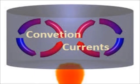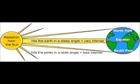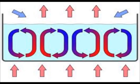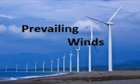Convection currents. The equator gets hit with the most intense and greatest amounts of solar energy. This causes convection currents to occur.